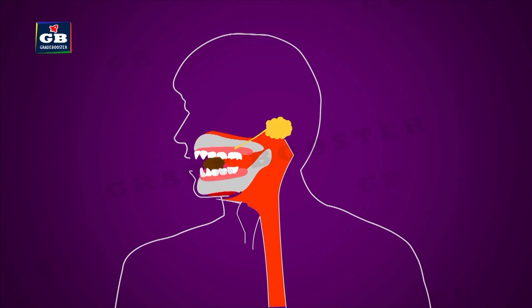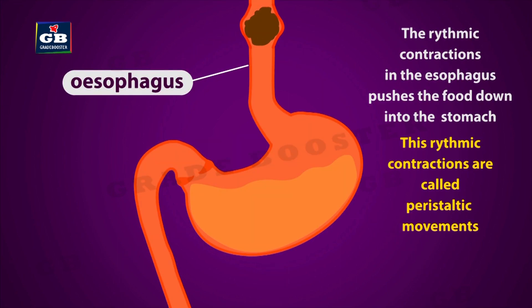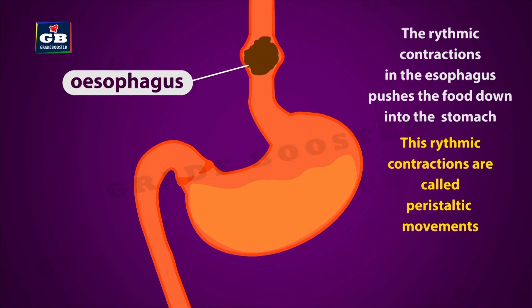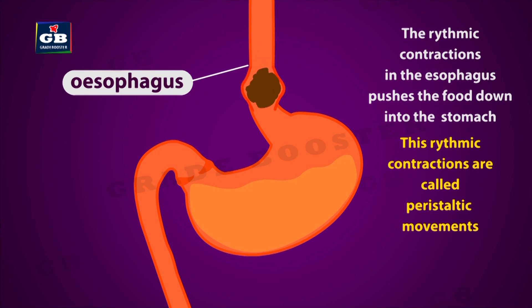The food is well chewed in the mouth and then passes down into the stomach through the esophagus. The rhythmic contractions of the esophagus help the downward movement of the food. These rhythmic contractions are called peristaltic movements.